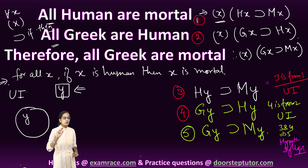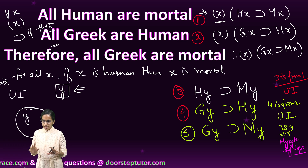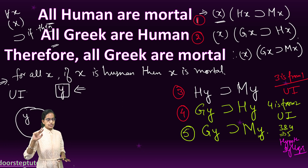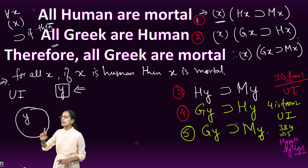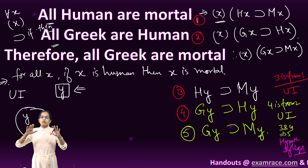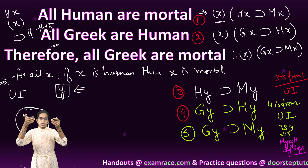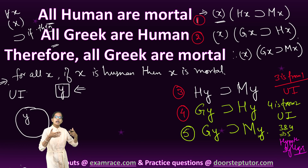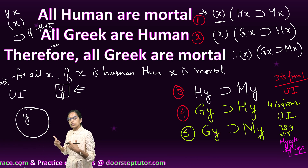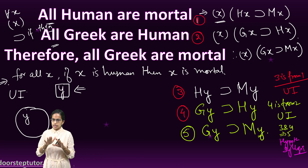To summarize universal instantiation: we bring in an individual example using any arbitrarily selected individual. When the universal statement is true for the whole domain, it is true for that individual instance. That is what we prove through universal instantiation.